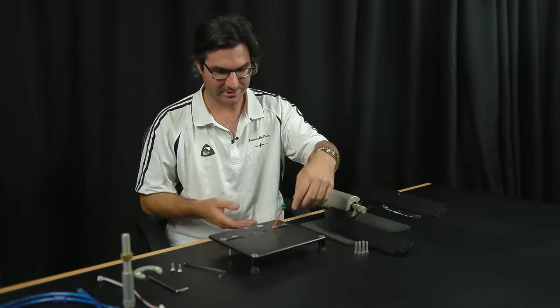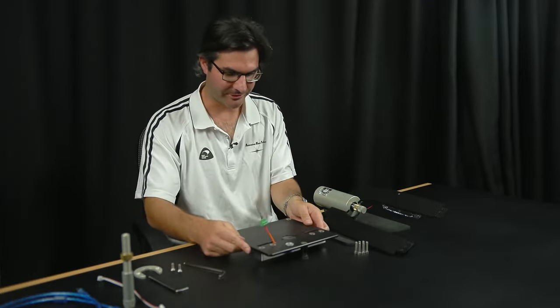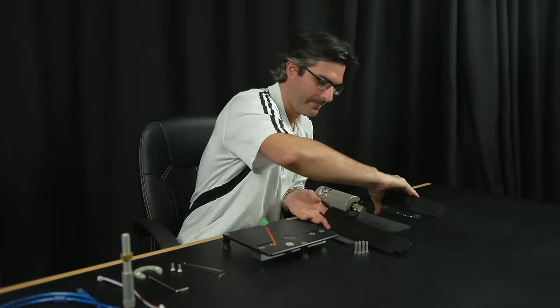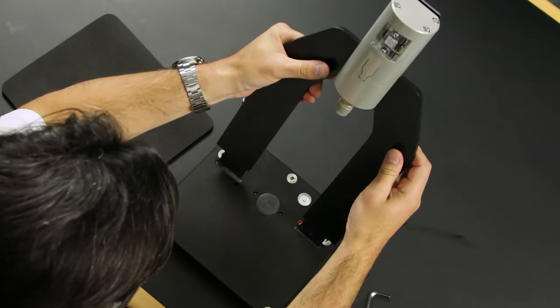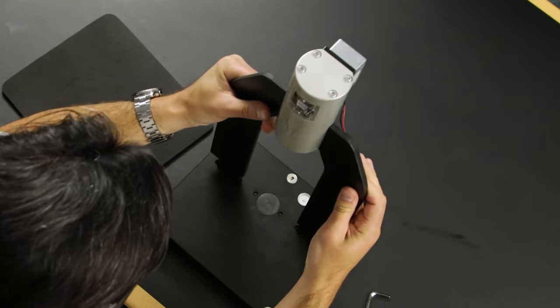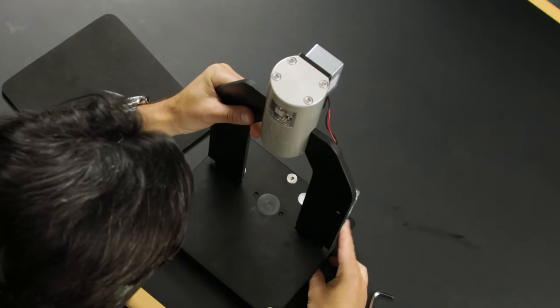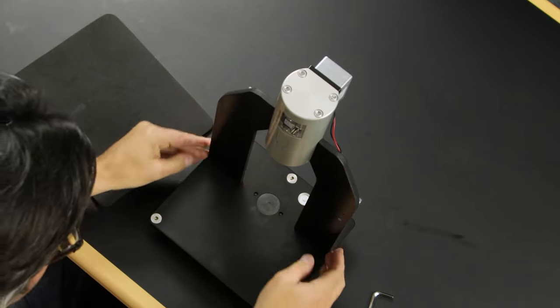What we want to do first is attach the main support structure and RAM itself to the base. Have the base facing you, have the column and RAM facing you, and slot it in. It may take a little bit of tweaking, and that'll sit in there quite nicely.